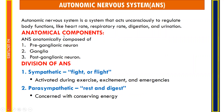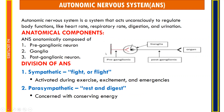Thus it controls involuntary activities like heart rate, respiratory rate, digestion, and urination. The ANS has three anatomical components. The first is the preganglionic neuron, whose cell bodies are located in the CNS, that is the brain or spinal cord. The second is the ganglia, where the preganglionic neuron forms synapses with the third component, the postganglionic neuron, whose cell bodies are located in the ganglia, outside the CNS.